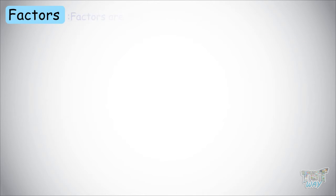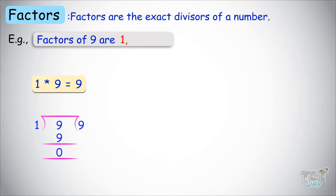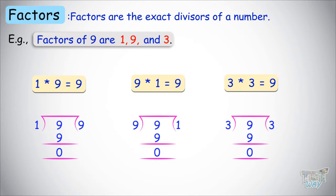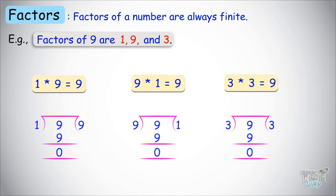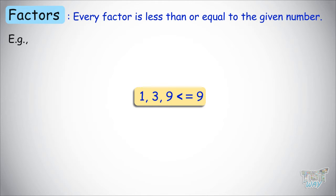Factors are the exact divisors of the number. For example, factors of 9 are 1, 9 itself, and 3. So 1 and the number itself are always a factor. The factors of a number are always limited, or finite, which means there is a countable number of factors for a number. And every factor is less than or equal to the given number.